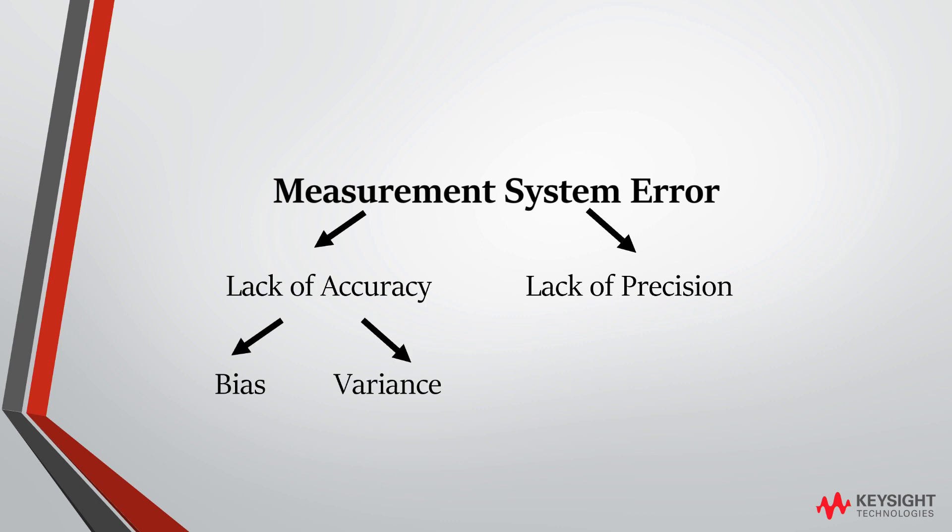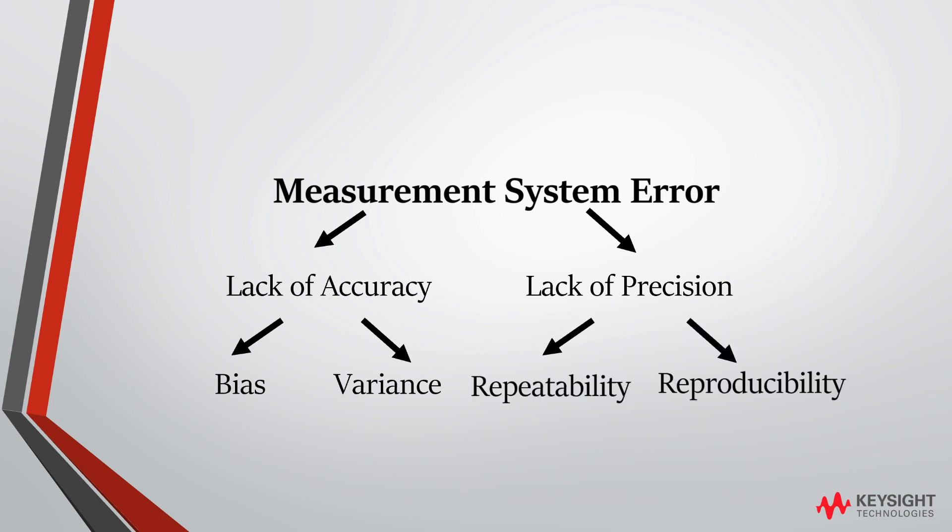Precision refers to the consistency of the recurrence of the same readings using the same method of measurement, and it is determined by repeatability and reproducibility.